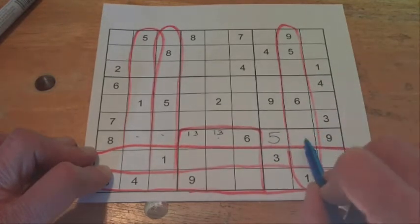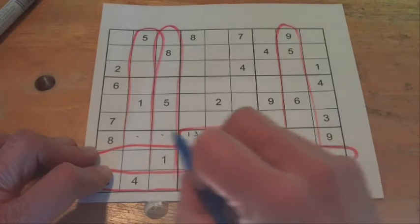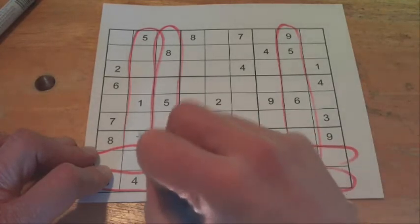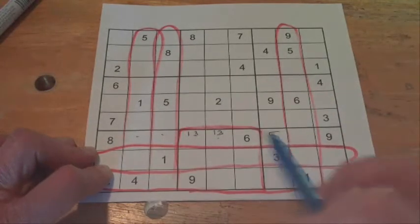That one's already got a number, that can't be a 5, that's got a 6, that's a 1 or a 3, 1 or a 3, that can't be a 5, can't be a 5, and that's got an 8. So in that case,